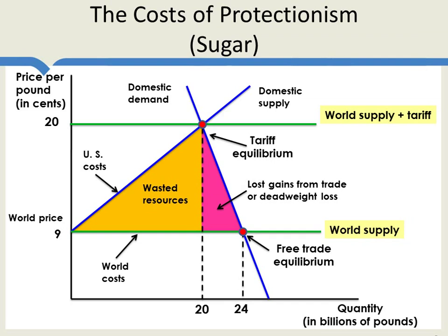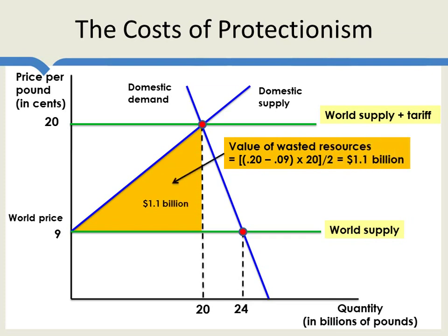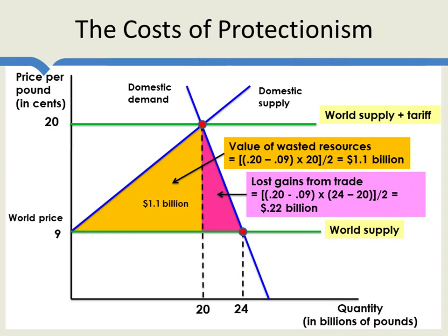With these numbers we can calculate the sizes of these wasted resources. This triangle is half base times height — the base is 20, the height is 20 minus 9, so the area is 1.1 billion. The dead weight loss triangle works out to 0.22 billion. So the total costs of the sugar tariff are 1.32 billion. Economists do these kinds of calculations all the time using assumptions about supply and demand curves.